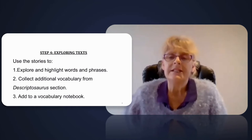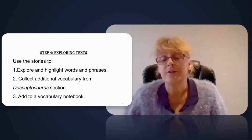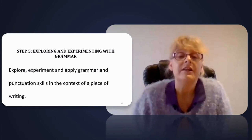Step four: exploring the texts. Using the stories, explore and highlight words and phrases to describe a setting, character or creature. Use the Descriptosaurus chapters to collect additional vocabulary. Add both to a vocabulary notebook.